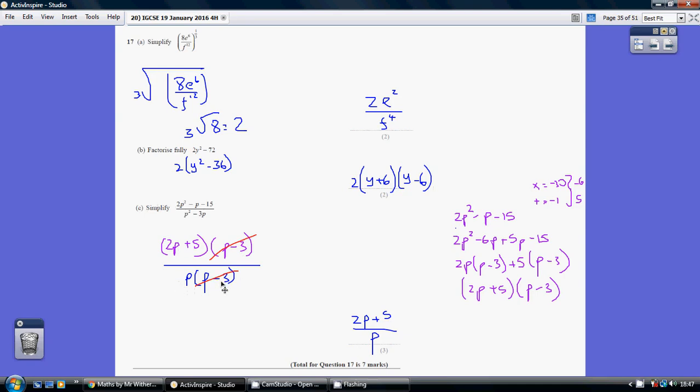Now part C, we need to fully factorize the numerator and fully factorize the denominator. The denominator is easy: we just take the p out, we've got p multiplied by p minus 3. The numerator is quite a complicated quadratic to factorize. Some people just do it by inspection, just by trial and error really. I prefer to do it like this, so this is what I've done to the numerator.